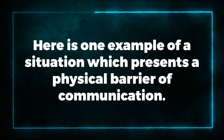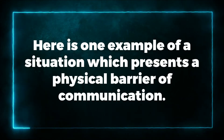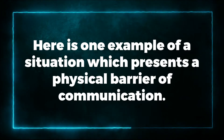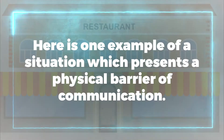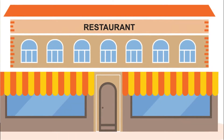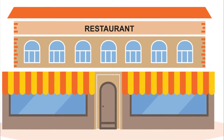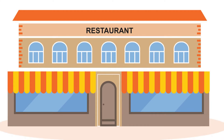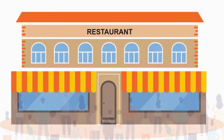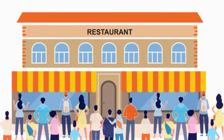Here is one example of a situation which presents a physical barrier of communication. In downtown Victoria, there is a newly opened restaurant owned by Mr. Feng, a half Chinese and half Filipino. Due to the great preparation for the opening of this restaurant, it was flooded with many customers, also from other towns.